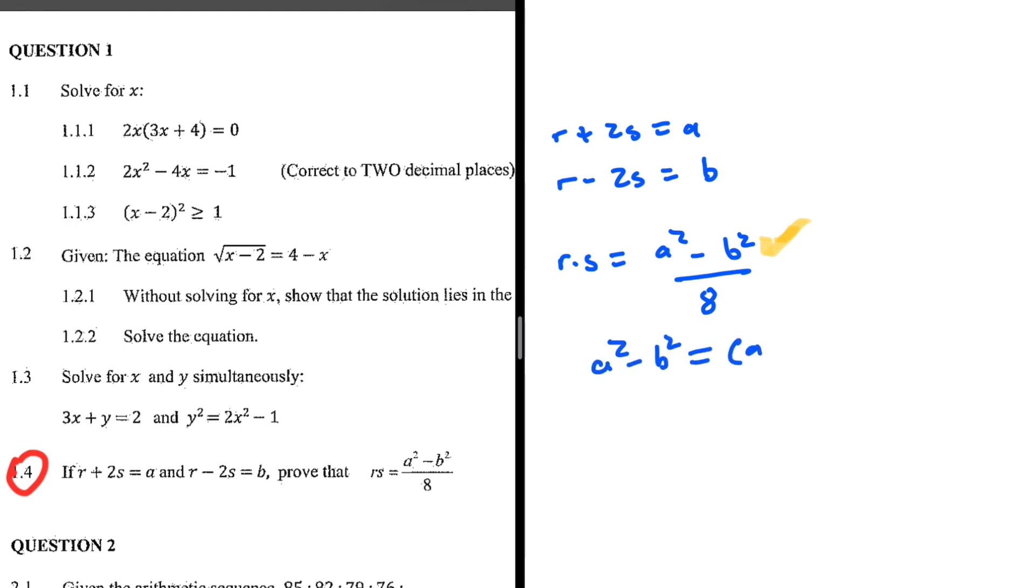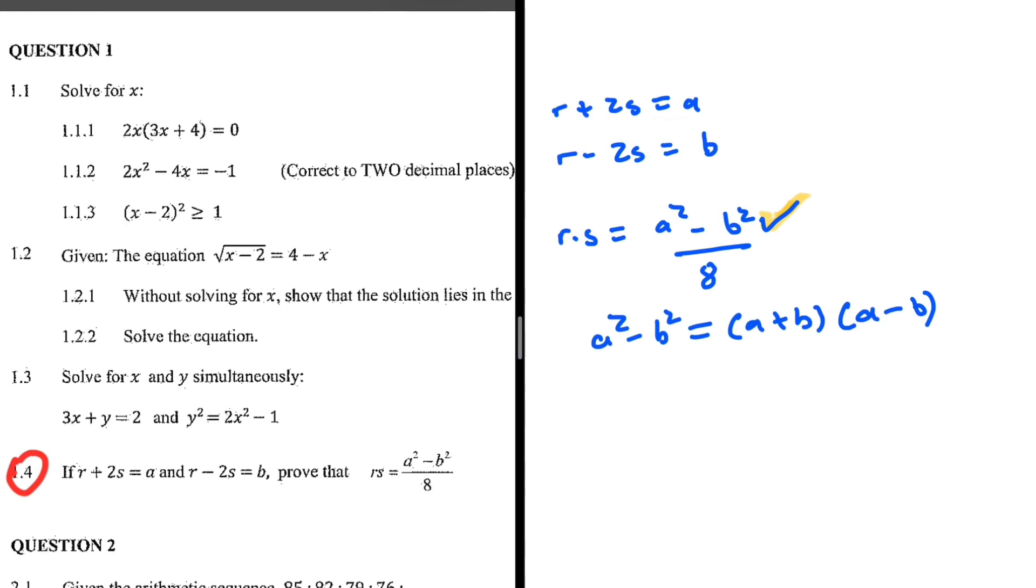Because we know that a squared minus b squared equals (a plus b) multiplied by (a minus b). There we go, that is the key to our starting description. Well, maybe another person could probably introduce another possible way, but as soon as you realize that you have a difference of two squares, it should be fairly easy.